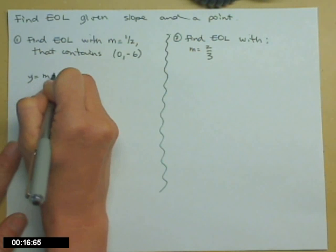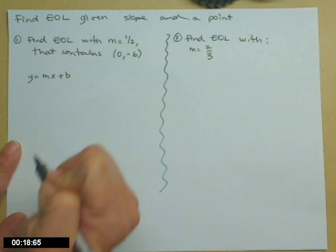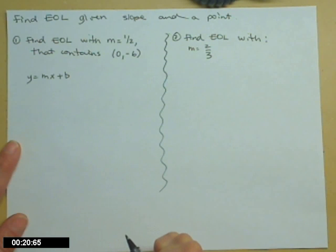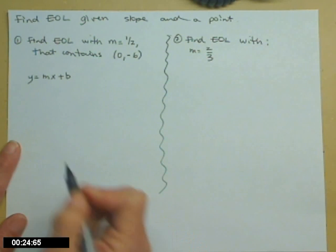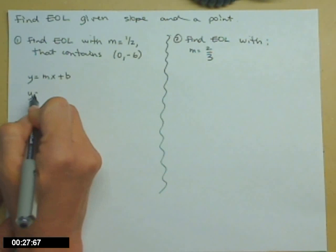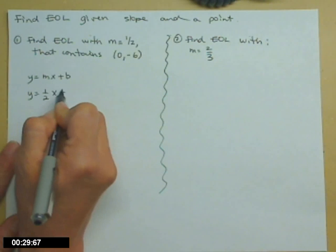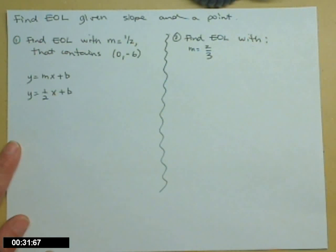You might start with the generic form for the equation of a line in slope-intercept form: y equals mx plus b, where m is the slope and b is the y-intercept. I know that m is 1/2, so I'll replace that m with 1/2 and leave everything else the same.